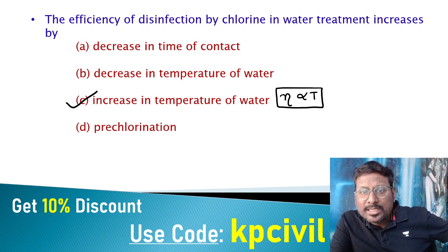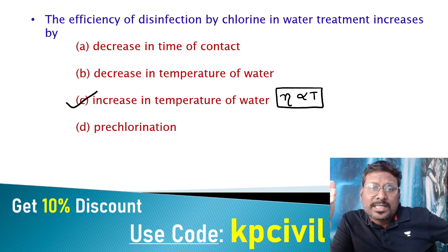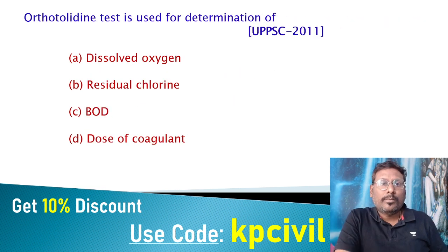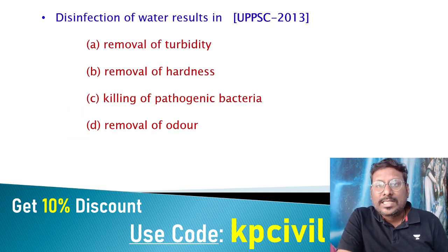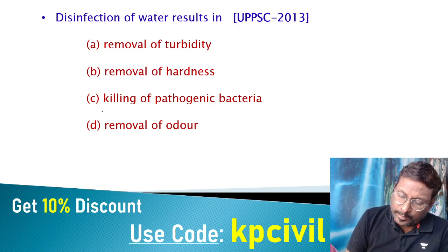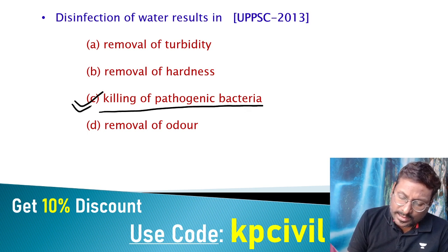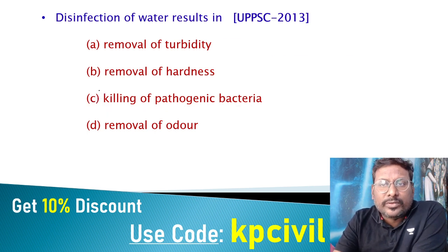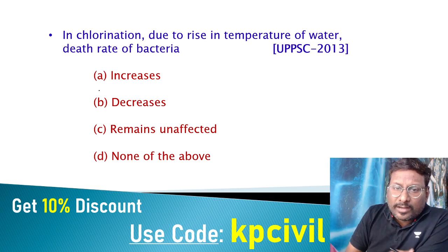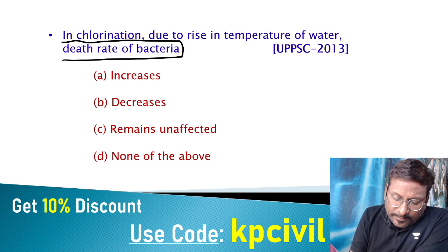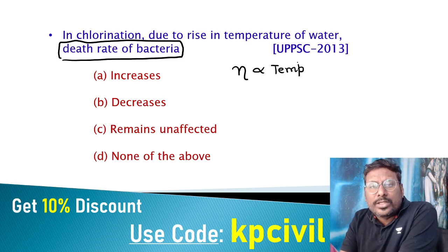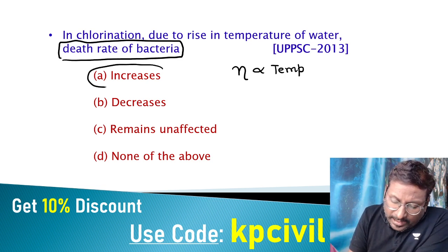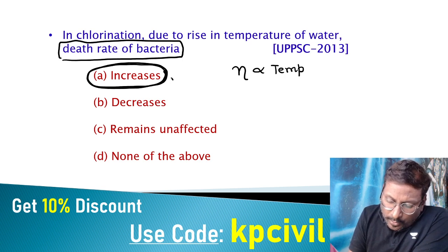HOCl and OCl⁻ contact pathogenic organisms — everything is a chemical process. Rate of reaction increases with temperature. Orthotolidine test is used to determine residual chlorine. Disinfection of water results in killing the most dangerous, disease-causing bacteria. Due to rise in temperature in chlorination, death rate of bacteria increases — chlorination efficiency is directly proportional to temperature — so more bacteria are killed.